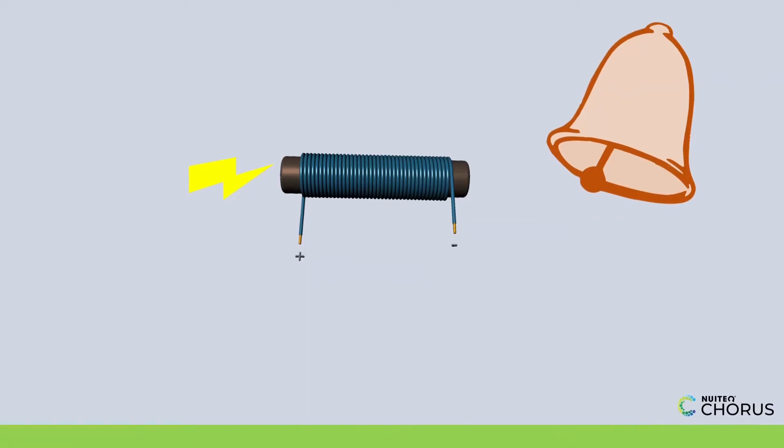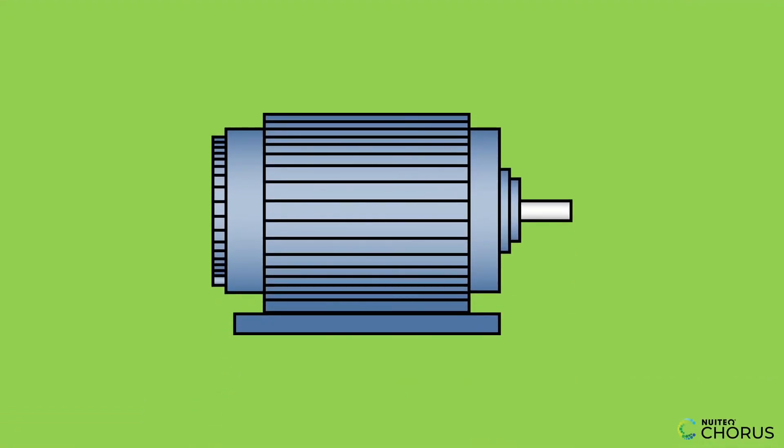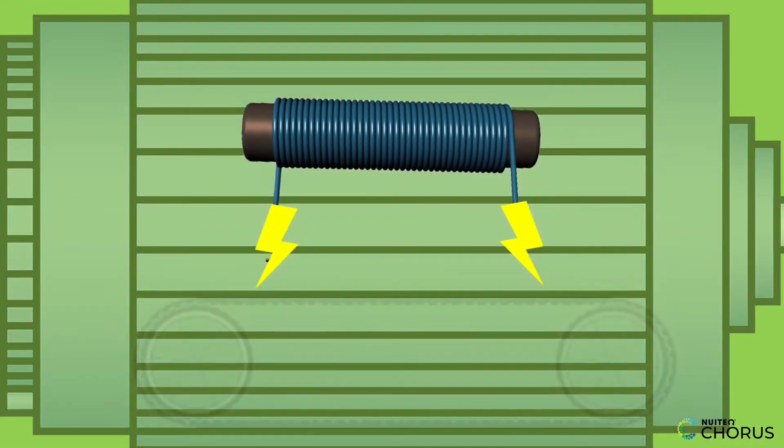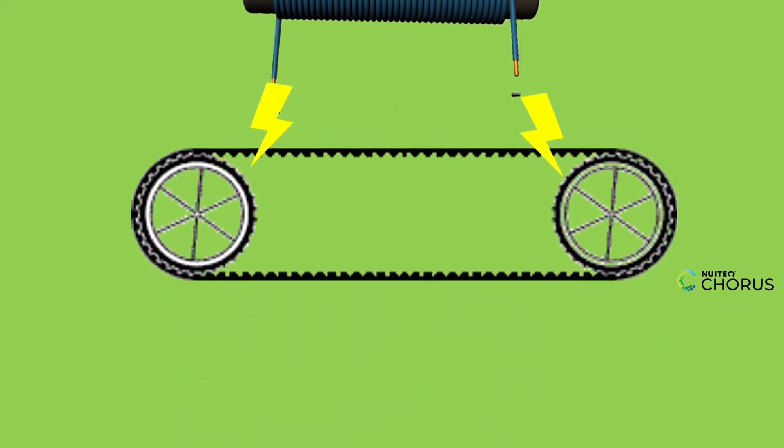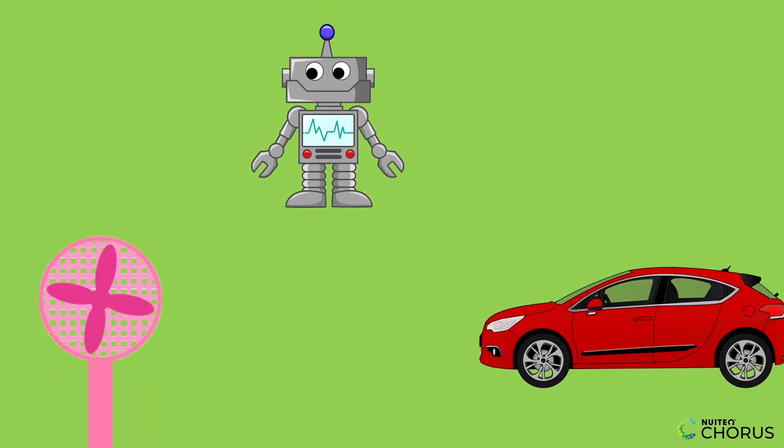Finally, let's look at electric motors. These are a bit more complex, but super important. Inside the motor, electromagnets are used to create motion. When the current flows, it makes the electromagnets push and pull on other magnets, spinning the motor's parts. This powers things like fans, toys, and even electric cars.